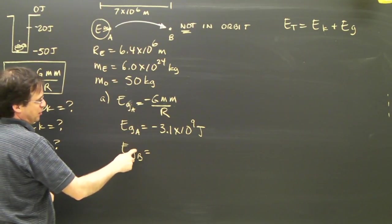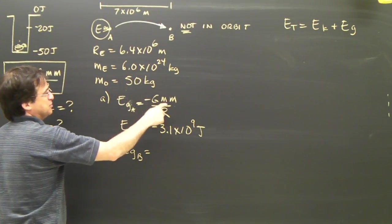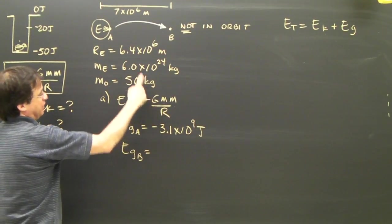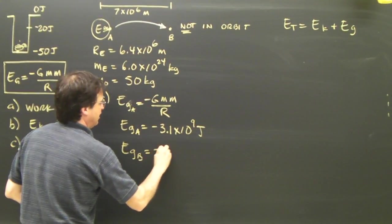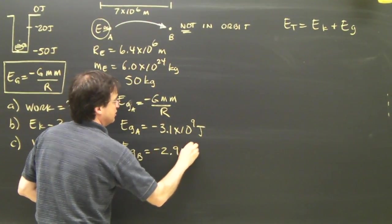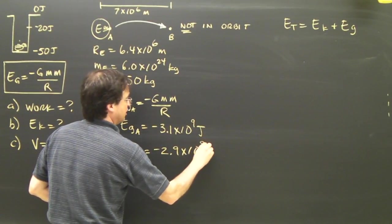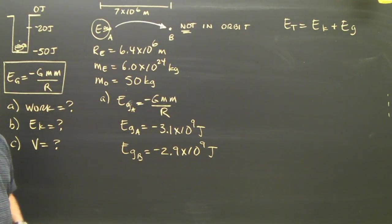So I've got negative G times the mass of the Earth times the mass of the object divided by a different R, and I get negative 2.9 times 10 to the 9 joules. Try to get a calculator and see if you can get those two numbers.